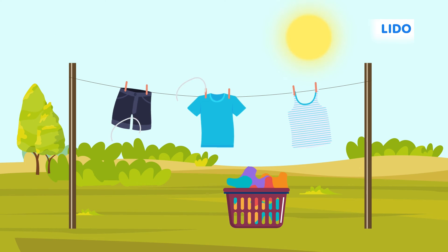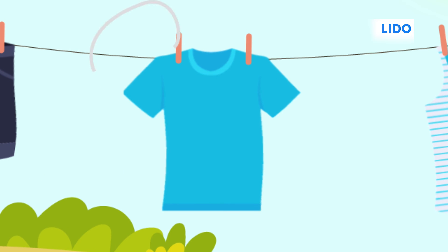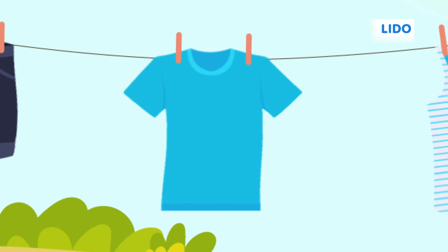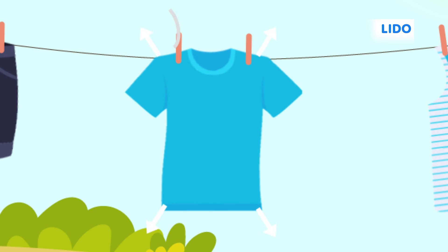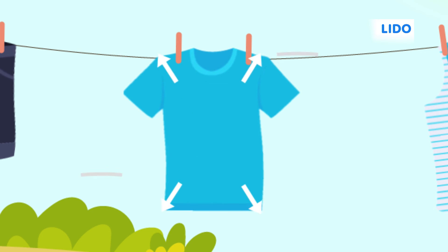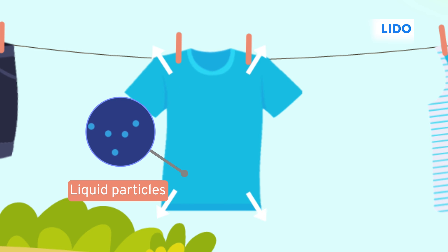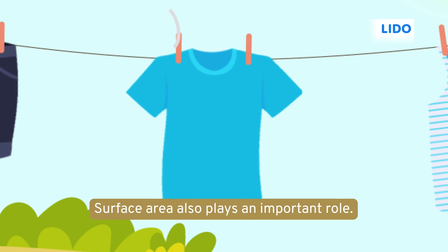Now, it's easy to understand why our clothes dry faster on a windy day. Think about why we always hang our clothes out for drying on a string instead of piling them up in a basket and keeping the basket out in the sun. By putting the clothes on a string, we increase the surface area of the damp cloth, which means there is a high probability of liquid particles escaping from the cloth in the form of vapor. So, surface area also plays an important role.